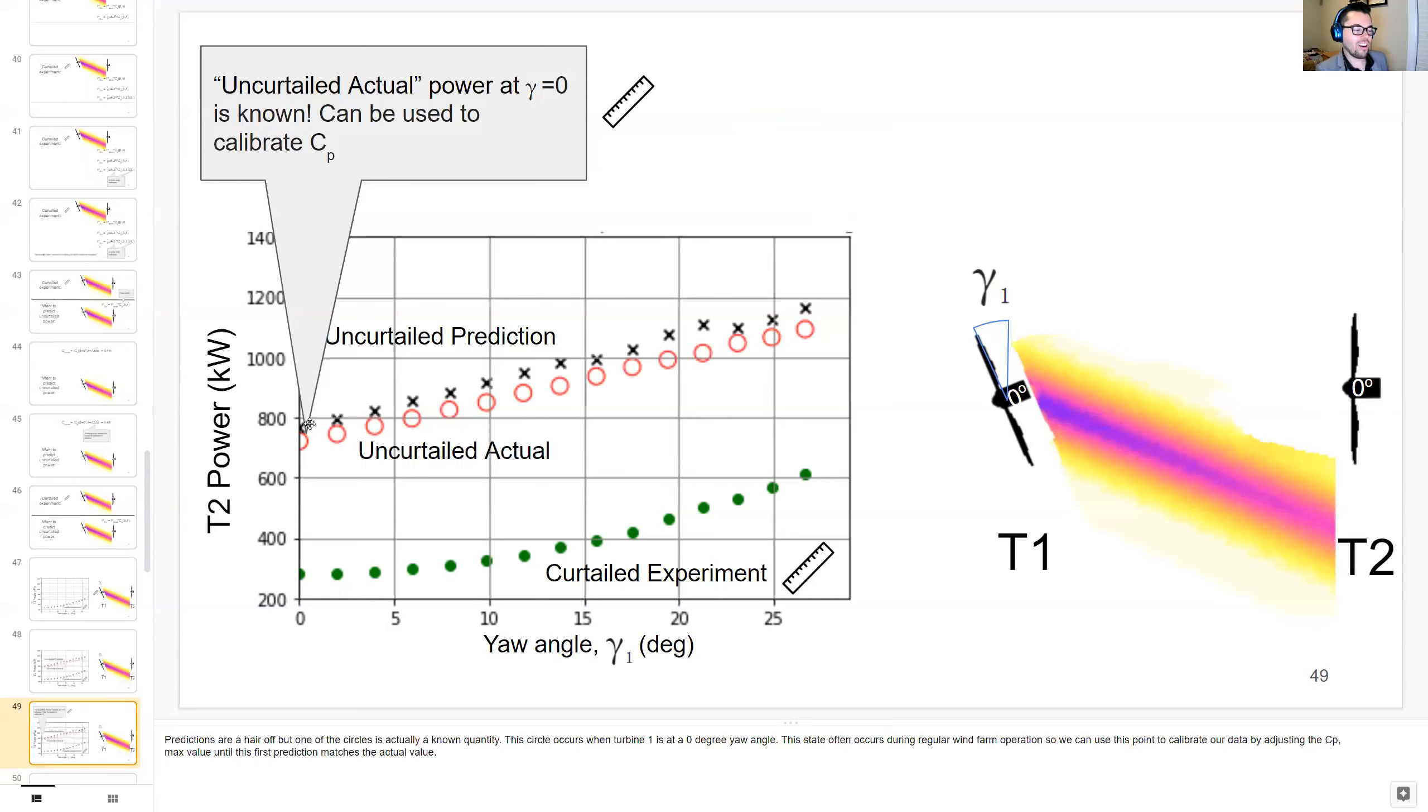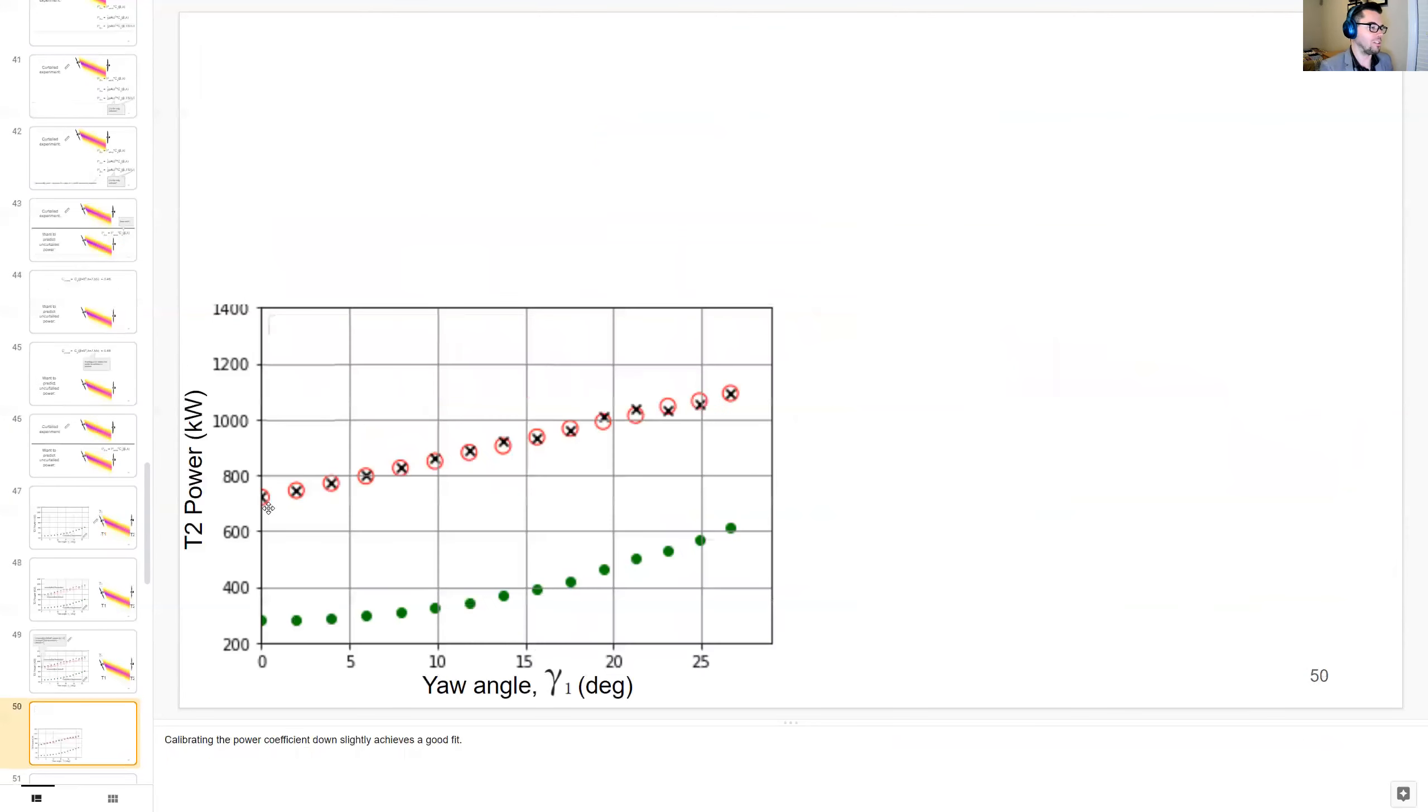But predictions are a little bit off. But we can use this first circle as a known quantity because this circle occurs when turbine 1 is at a zero degree yaw angle. And this state often occurs during regular wind farm operation. So we can use this point to calibrate our data by adjusting the CP max value until this first prediction matches the actual value. And that's what we do here. And we see it's a better fit.